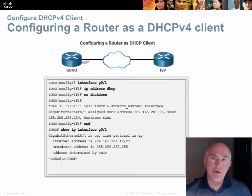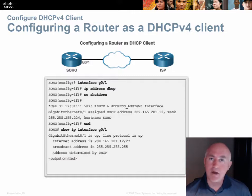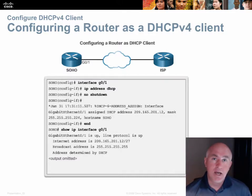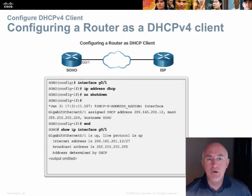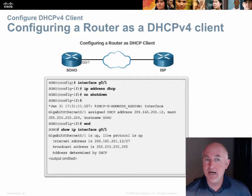You can also configure a router as a DHCP client. This is often needed when connecting to an ISP where you're not told your IP address — you need to obtain it dynamically. The command is very easy: instead of 'ip address' followed by a specific address, just type 'ip address dhcp' and it takes care of the rest.